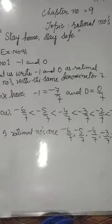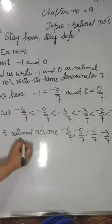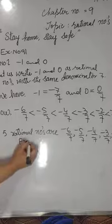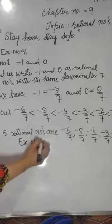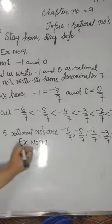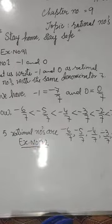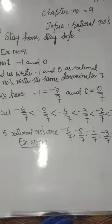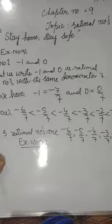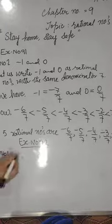Next questions mein kaun bada hai, kaun chota hai — aur uske baad fill-in-the-blanks — yeh saare bilkul isi tarah se karne hain. Ab chalte hain exercise number 9.2. Exercise number 9.2 mein hai ke rational numbers ko add kaise karne hain, subtract kaise karte hain, multiply kaise karte hain aur divide kaise karte hain. Chaliye, pehla question karenge — question number 1 ka second part karenge.